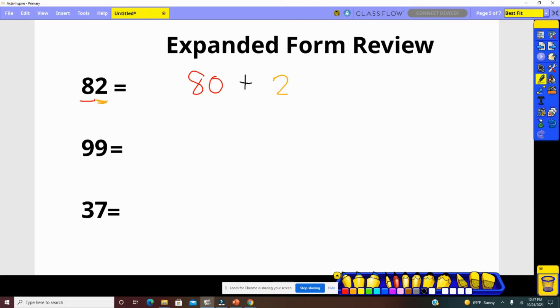Next number, 99. The 9 in the tens place has a value of 90. The 9 in the ones place has a value of 9. 90 plus 9 equals 99.